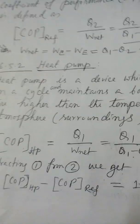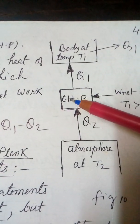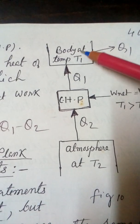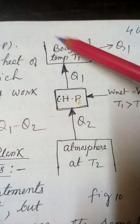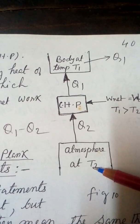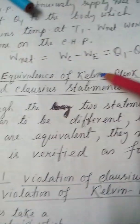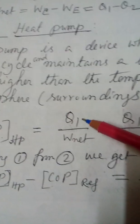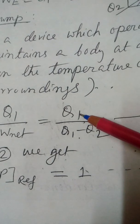Now let us talk about the heat pump. In a cyclic heat pump, the body is at temperature T1. In the winter season, the temperature T1 must be maintained higher than the atmospheric temperature T2. The COP of the heat pump is Q1 divided by W_net, which equals Q1 divided by (Q1 minus Q2).